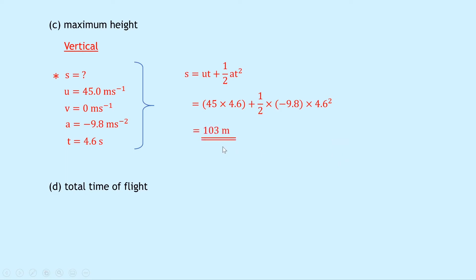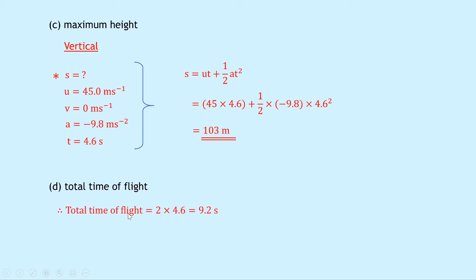Part d says calculate the total time of flight. From part b, the time to reach maximum height was 4.6 seconds. The second half of the projectile's motion is identical but in the opposite direction, so the projectile takes the same time to fall as it does to reach maximum height. The total time of flight equals 2 times 4.6, which equals 9.2 seconds.